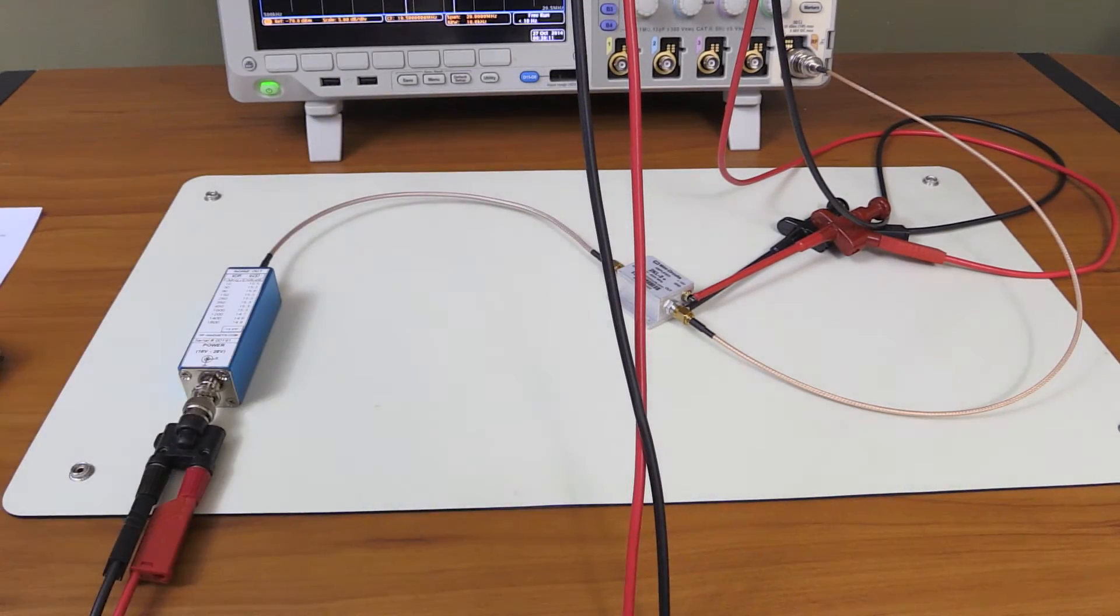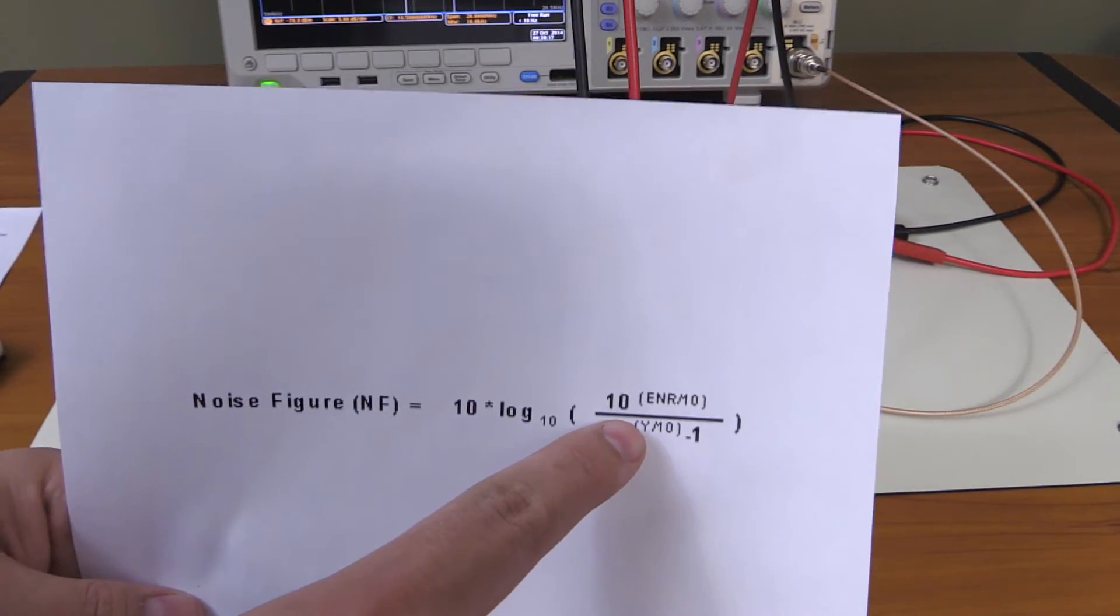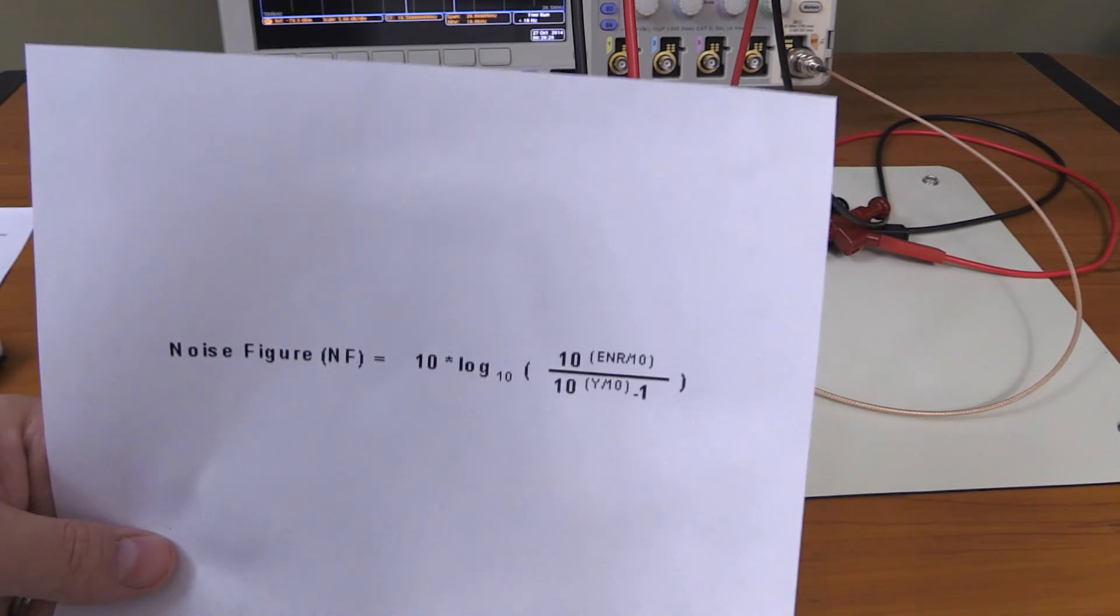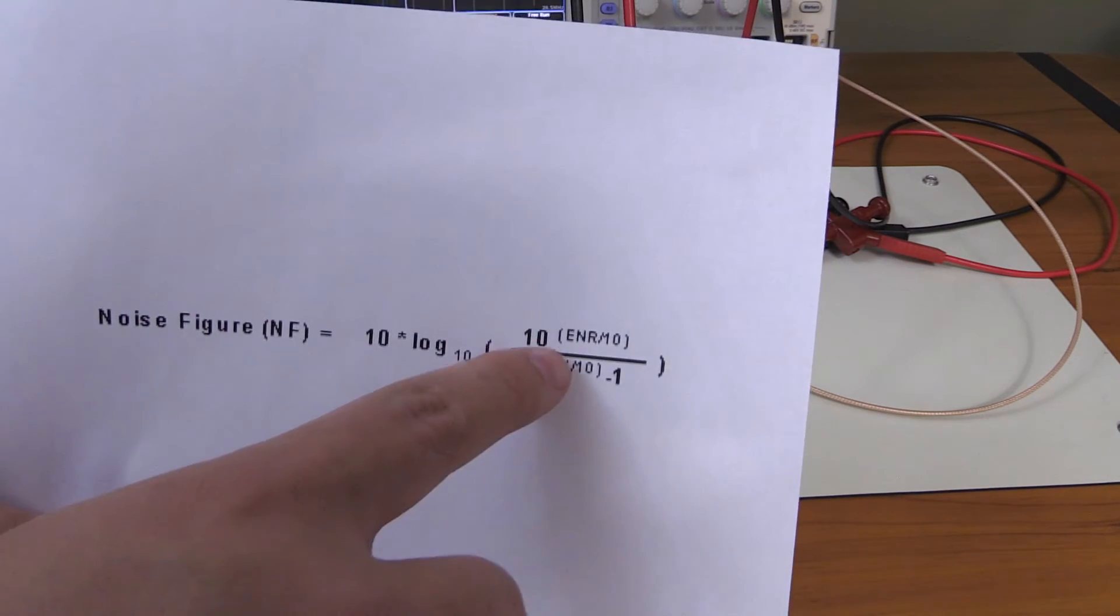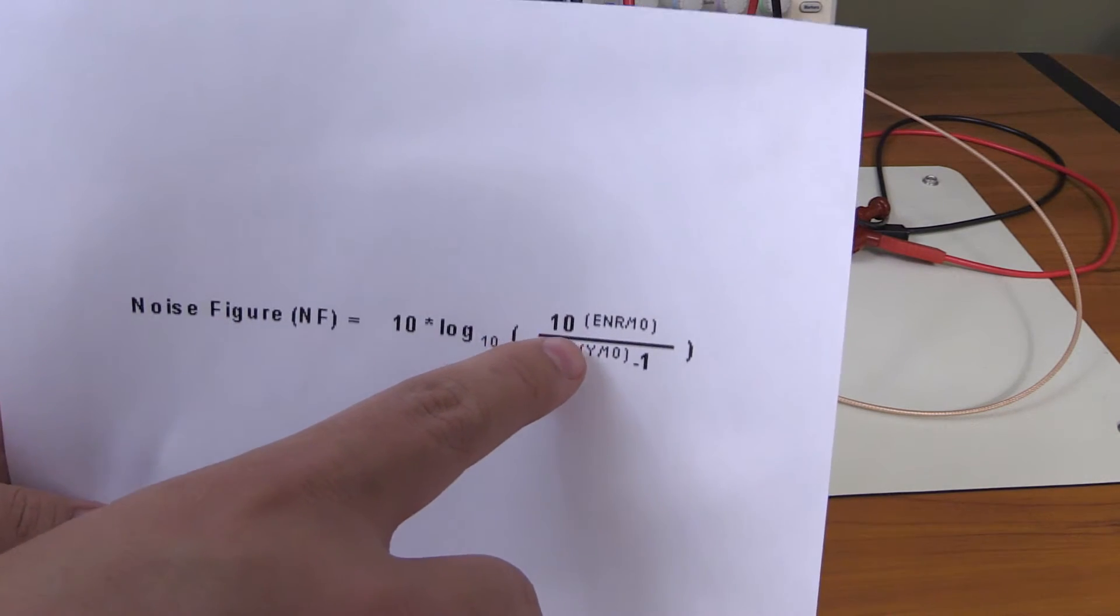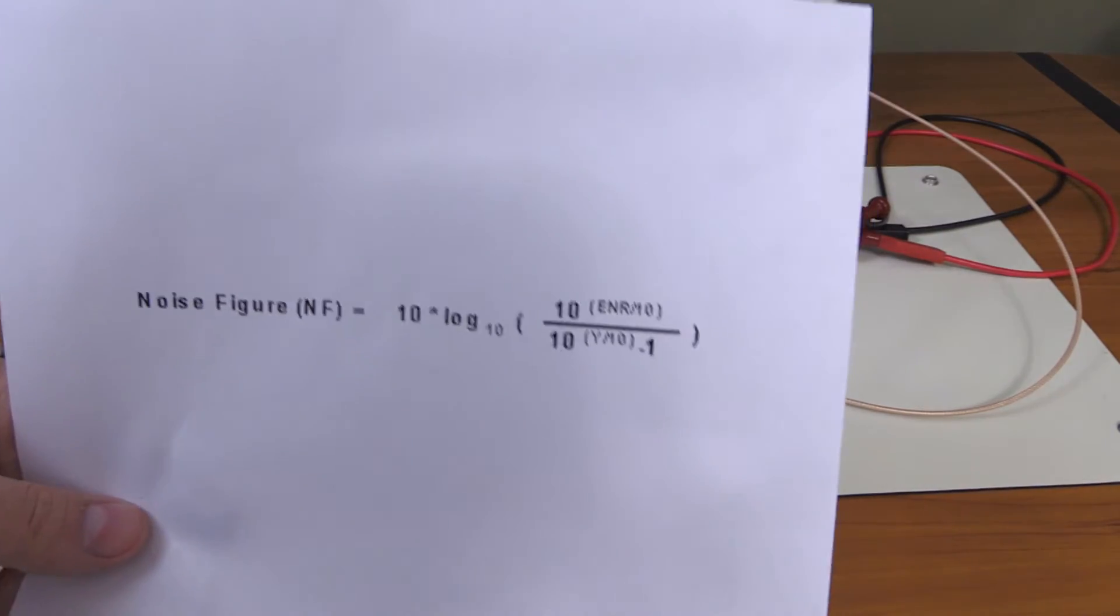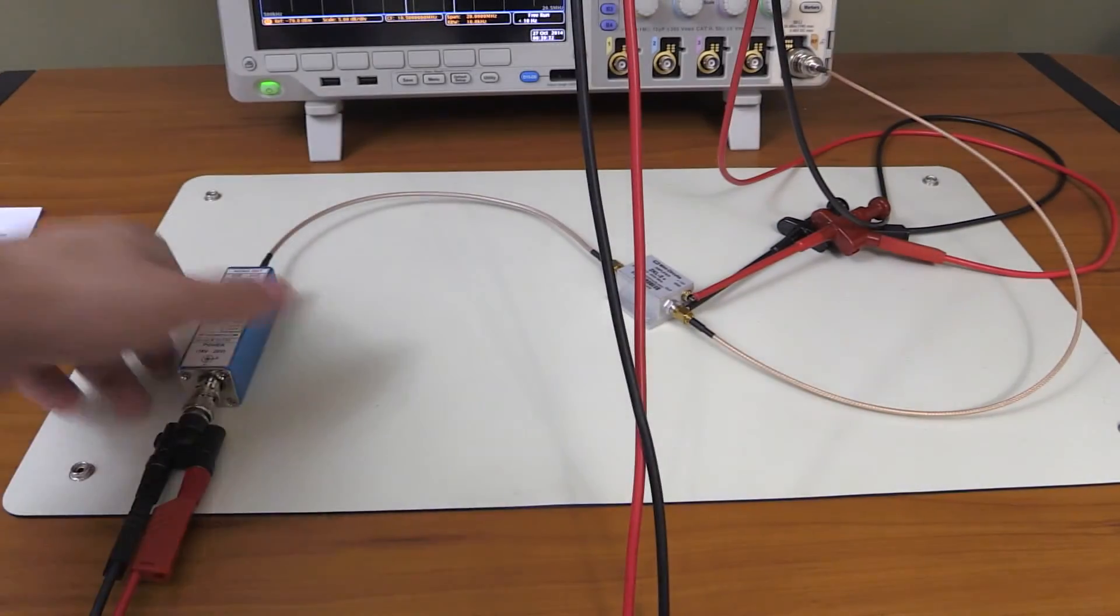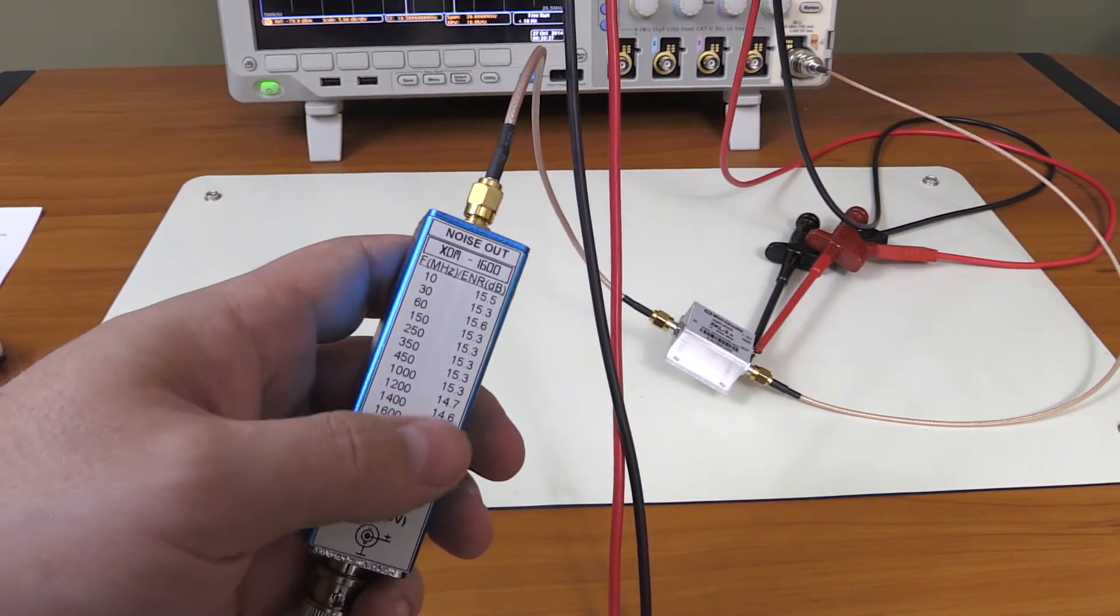Let's look at this formula again real quick. We have determined Y—that's the difference between the output power with the noise source turned on and noise source turned off. We have stored Y in the calculator already. Now we need ENR, that's the excess noise ratio of the noise source, and we simply get that from the data sheet. In this case, it's actually indicated on my noise source.